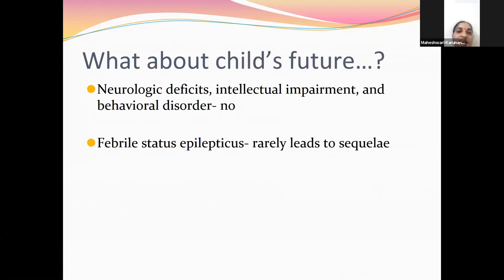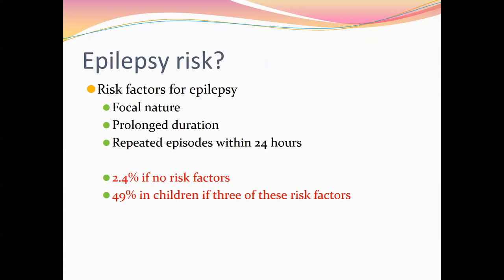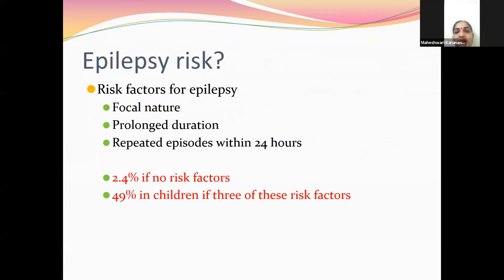Regarding the child's future: neurological deficits, intellectual impairment, and behavioral disorders will not occur with simple febrile seizures. However, febrile status epilepticus can rarely lead to sequelae — there is around a 5% chance of epilepsy. Risk factors for future epilepsy include: focal seizures, prolonged duration, repeated episodes within 24 hours, and family history of epilepsy. With no risk factors, the chance is 2.4%; with all three risk factors, the chance of future epilepsy is around 49%.